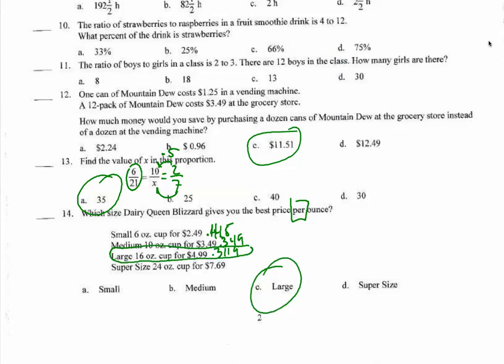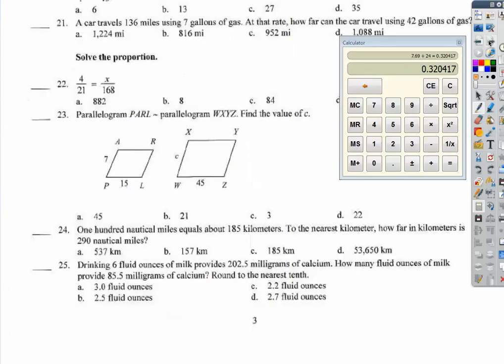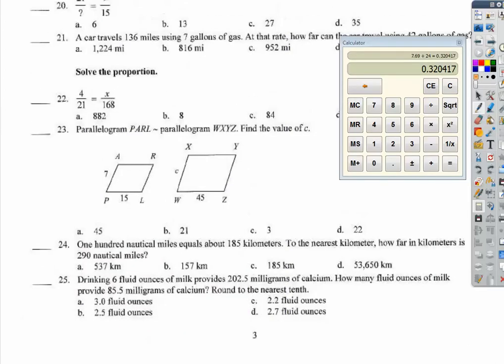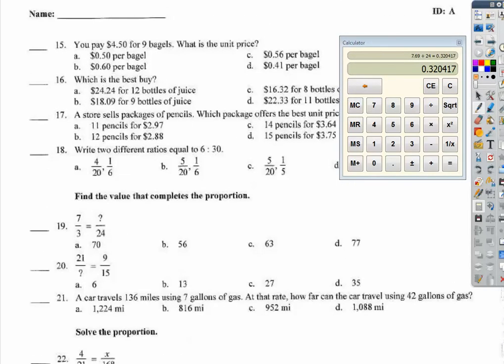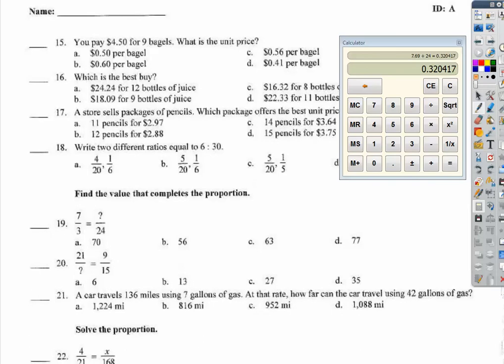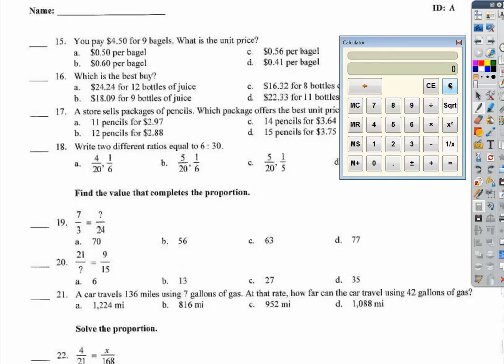Another page of this? You've got to be kidding me. Who gives you this many multiple choice questions? Number 15. We want unit price per bagel. Per meaning divide. So, dollars divided by bagels. $4.50 divided by 9. That's 50 cents per bagel. Excellent.